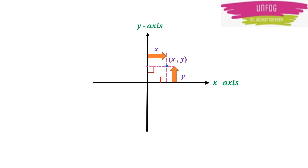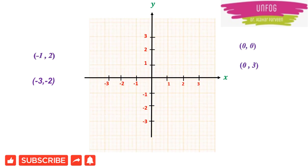Now let us take one example and plot points on the Cartesian plane. We have four points: (0, 0), (0, 3), (−1, 2), and (−3, −2). We want to plot these on the Cartesian plane with x and y axes. The best trick before starting to plot is to have an overview of the graph and a rough idea about where these points will actually lie.